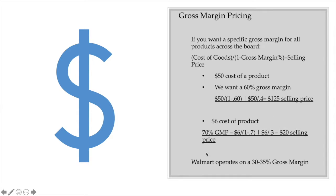Why do we need to stay in this range? Walmart operates on about a 30 to 35% gross margin. How can they do it? Because they have such massive volume. You cannot get in a price war with an organization like that — they can just bury us. We're going to have to be absolutely amazing in the product or service our business is selling to achieve that 60% gross margin.